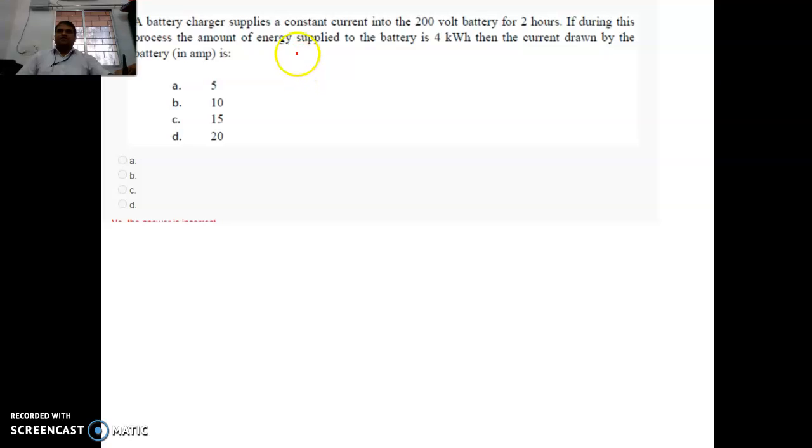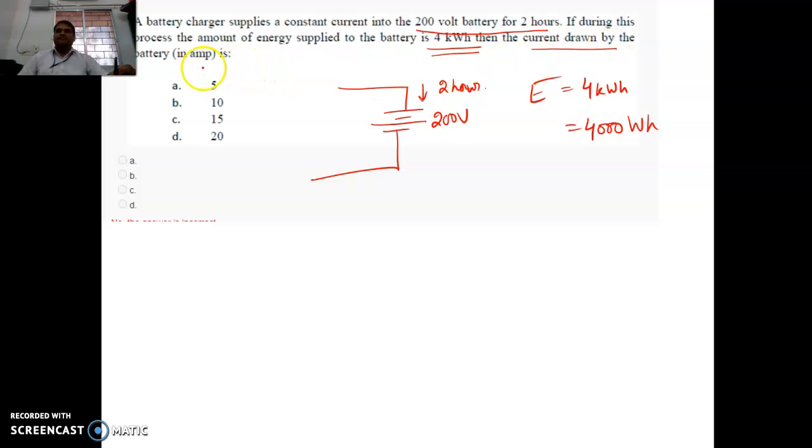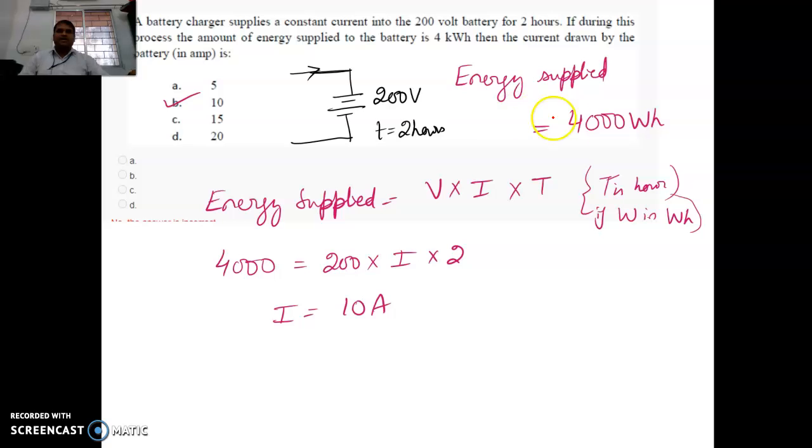Next question is about the battery. Charger supplies a constant current into a 200 volt battery for 2 hours. The battery is of 200 volts, it is supplied for 2 hours. If during this process, the amount of energy supplied to the battery is 4 kilowatt hour, the energy is also given, that is 4000 watt hour. Then the current drawn by the battery is how much? Total energy equals V, I and T. It is in kilowatt hour, so convert into watt hour. This is the voltage and this is the current and this is the time in hours. From that you can get current is 10 amperes. The answer is B.